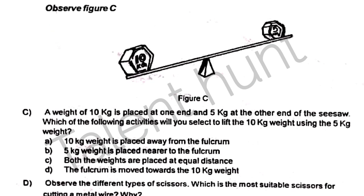Observe figure C. A weight of 10 kg is placed at one end and 5 kg at another end of the seesaw. Which of the following activities will you select to lift the 10 kg weight using the 5 kg weight? We have four options.